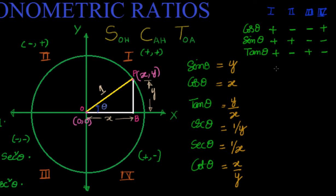So you can see that all the trigonometric ratios are positive in the first quadrant. In the second quadrant, sin and sin-related ratios are positive. In the third quadrant, tan and cot are positive. In the fourth quadrant, cos is positive.